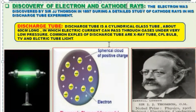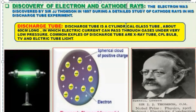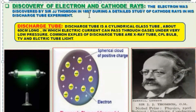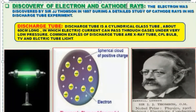The electron was discovered by Sir JJ Thompson in 1897 during a detailed study of cathode rays in his discharge tube experiment. Before we discuss the experiment, let's take a moment to understand the concept of the discharge tube.